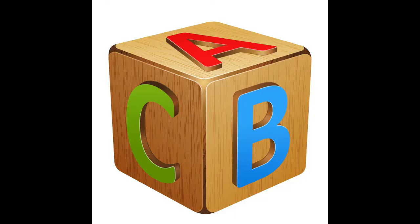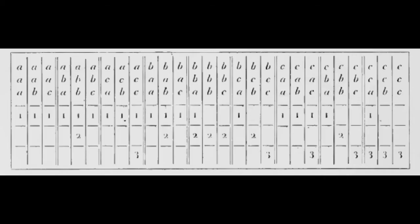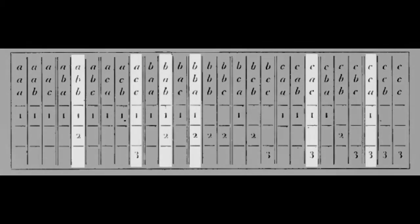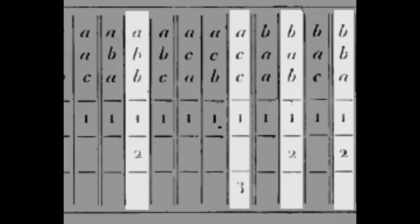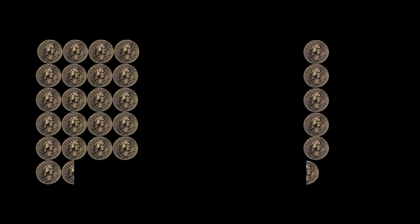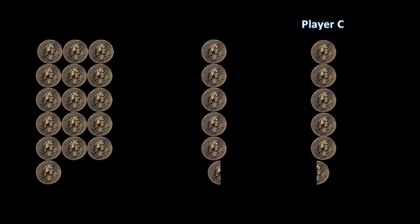This meant that there were three times three times three equals twenty-seven possible outcomes. He wrote them out in the same way that Fermat had done with the case of two players. A problem is immediately clear: some of the columns have more than one winner. In the fifth one, for example, giving one point to A and two points to B means that they both win. Pascal decided to split the prize between the two winners. Under that condition, for every twenty-seven pistoles of prize money, player A would receive sixteen, while players B and C would receive five and a half each.